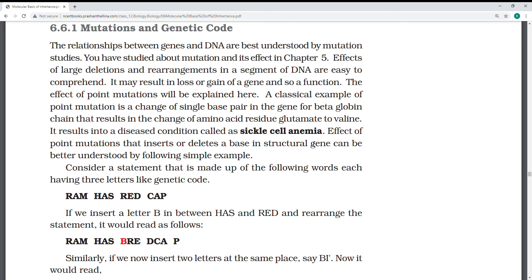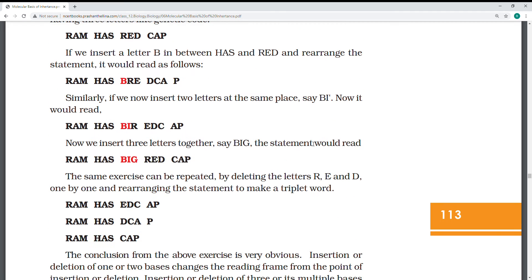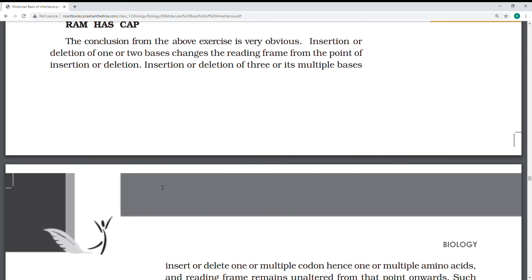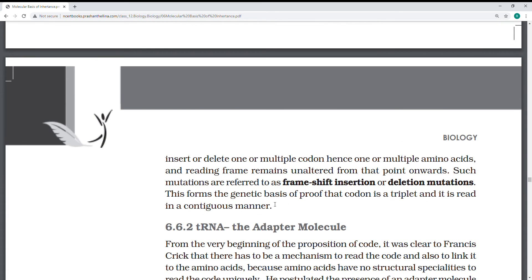Frame shift mutation is also there, which is nothing but the complete frame - suppose ACUGGGAC, the full frame will get deleted and another will come. That is the example of the disease beta-thalassemia. That is called the best example for frame shift mutation. If you see here, the codon which is coding oppositely. This is what about frame shift mutation, deletion mutation.